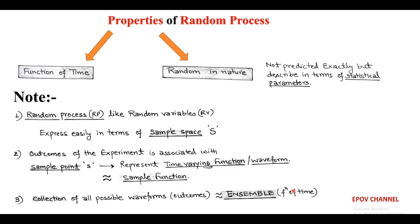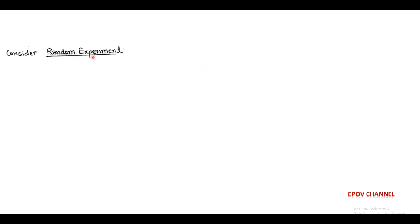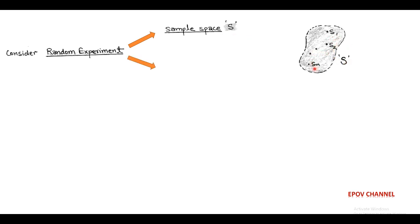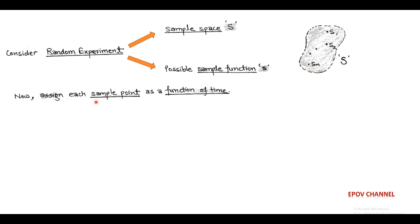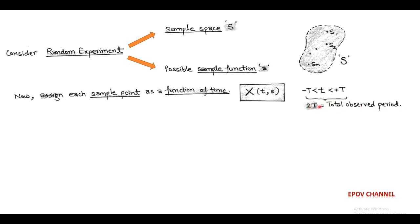For better understanding of random process, we consider any random experiment which has a sample space capital S. This sample space has n possible sample points, also called sample functions, which are also time-varying functions. The collection of all n possible sample functions is called the ensemble, which is also a function of time. Each sample point as a function of time can be represented by a function called capital X(t), where the interval of time t is from greater than minus T to less than plus T, having a total observed period of 2T.